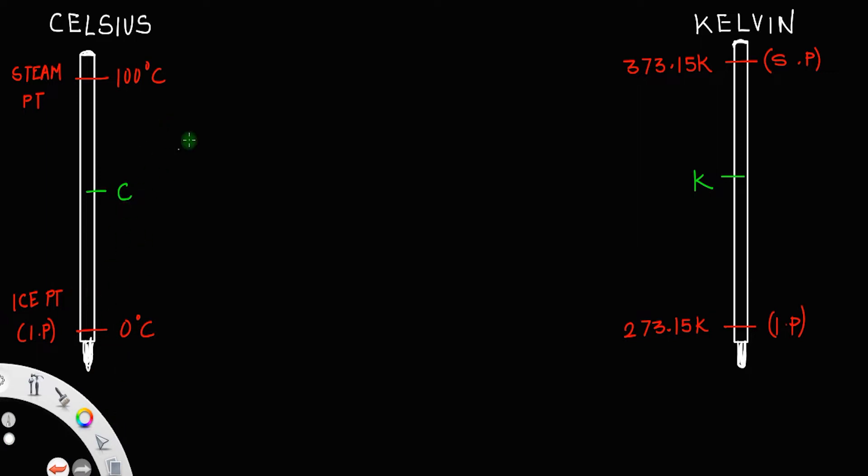For that we use the ratio: C minus the ice point of the Celsius scale, divided by the steam point minus the ice point of the Celsius scale. Which means C minus 0, divided by 100 minus 0.